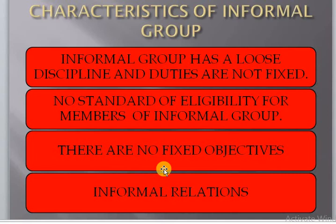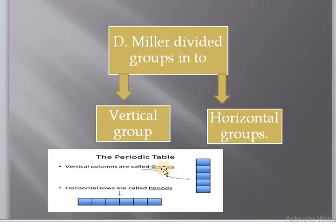Let me give you an example. When you feel like going to a park, it is your choice when you go and when you do not go. Or if there is a fair, it is your choice when you attend and when you leave. All these things depend on you. Miller has divided groups into two: vertical and horizontal.